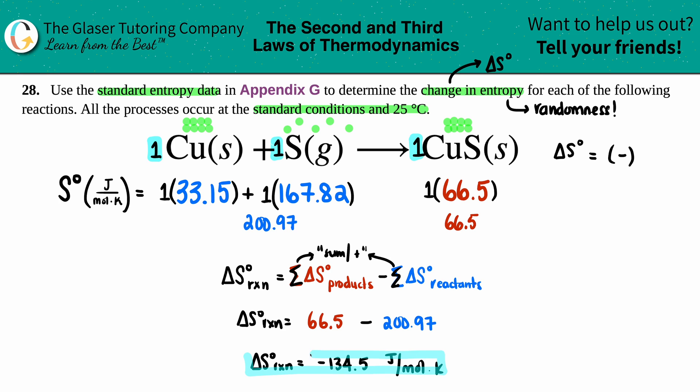And that is the answer. Makes sense. Going from more randomness to less randomness, so negative value. There you go.